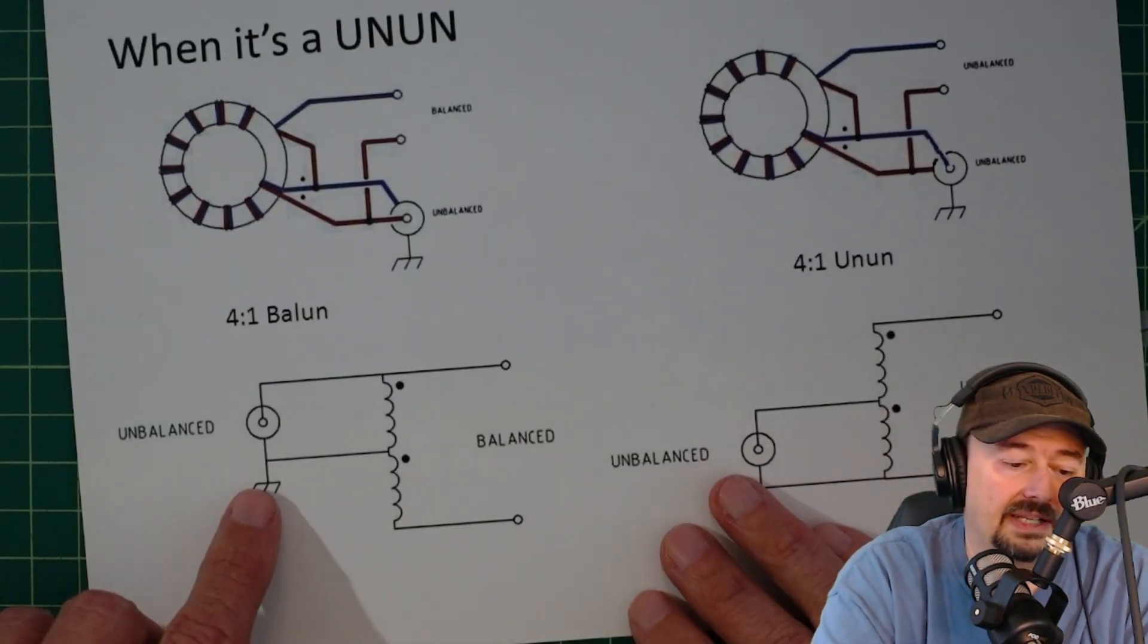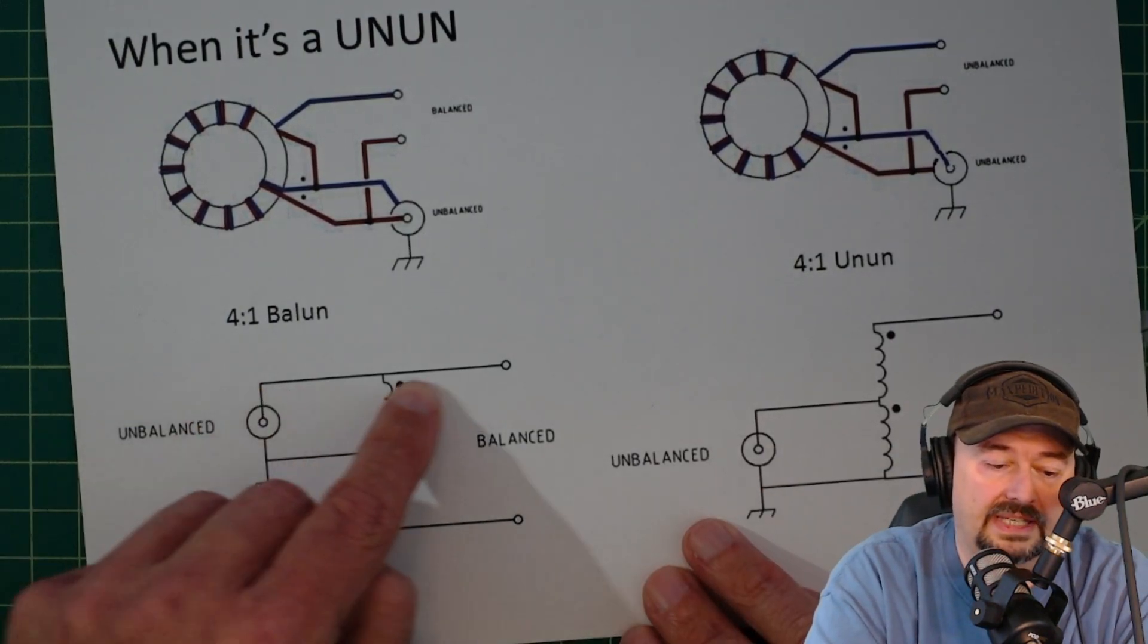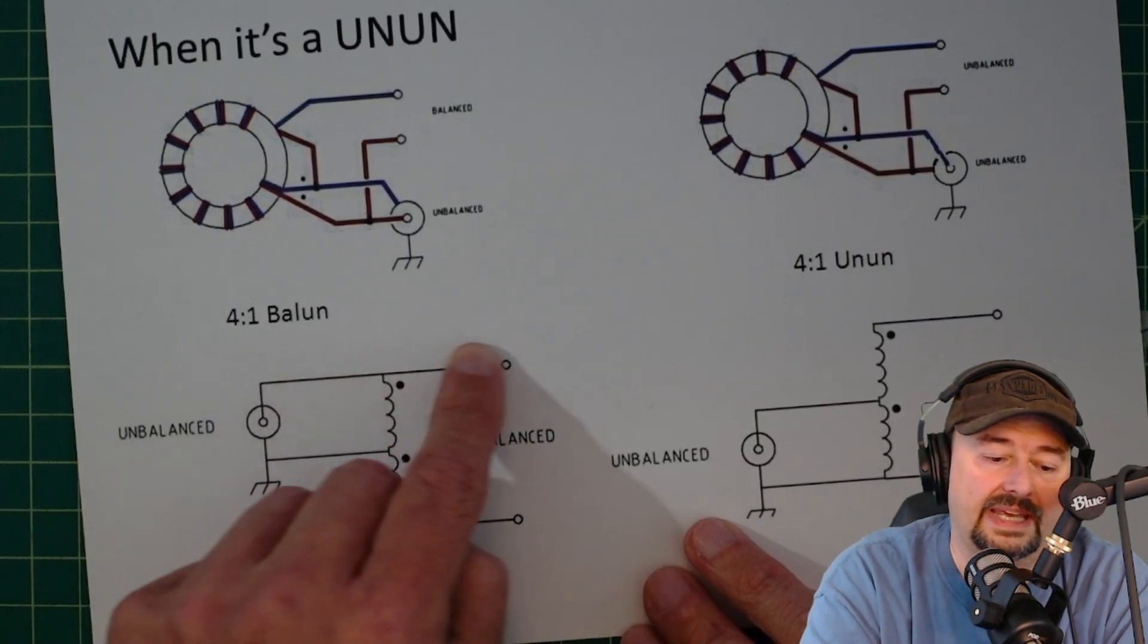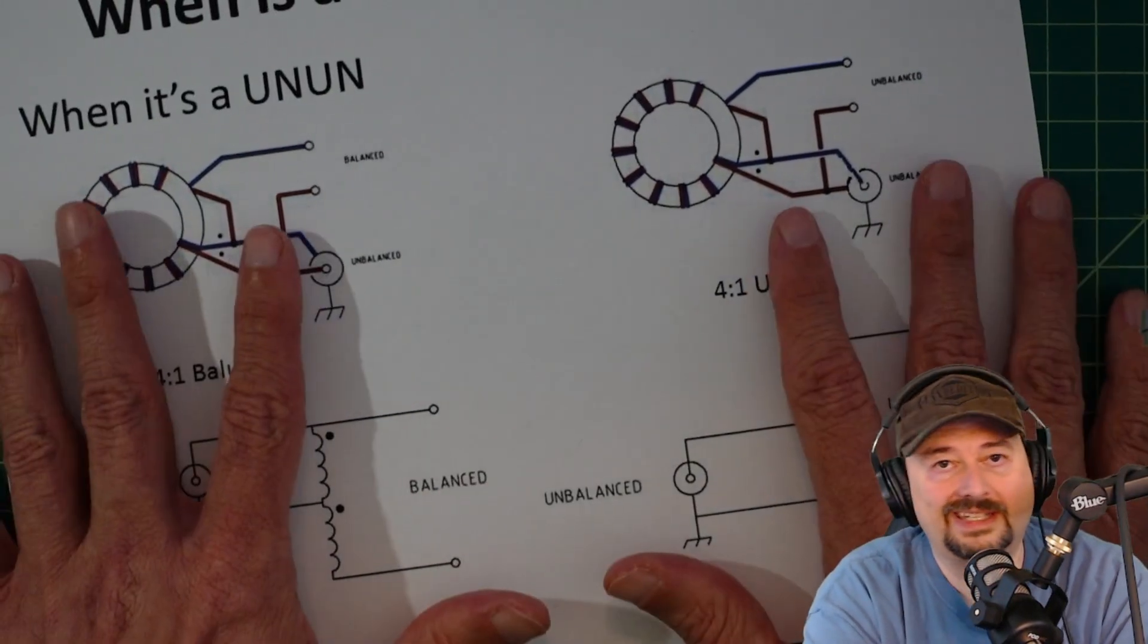What makes this an unun versus a balun is the shield is directly connected to the ground of our antenna. Over here on the balun, it is the center conductor that is directly connected to the element or the radiator of our antenna.